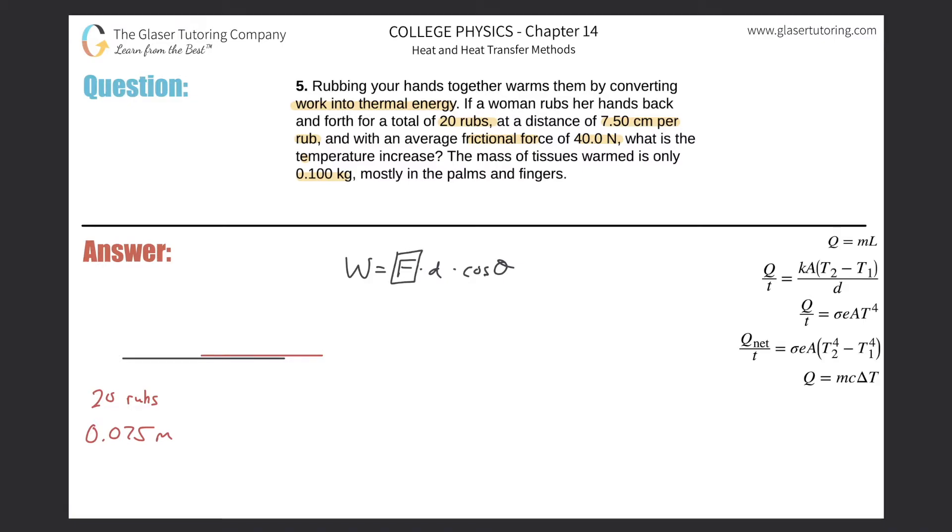If I know the force, the frictional force that is, and I know the distance over which that force is acting, and I know the angle between those two, then I can solve for the work. The frictional force is 40 newtons. The distance is going to be about 0.075 meters, and then the cosine of the angle between those two.